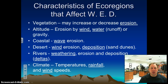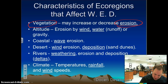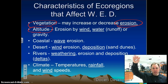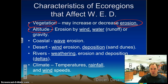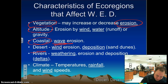We're going to talk a little about eco-regions of the United States and Texas that affect WED — weathering, erosion, and deposition. Those things would include vegetation, which may increase erosion; altitude — how high you are affects wind and water runoff. The higher you are in the mountains, the faster the wind and the faster water rushes downhill, picking up more sediment. Fast-moving water can do enormous things. Coastal areas have a lot of erosion by waves and water. In deserts, wind is a big erosion factor, creating lots of sand dunes.